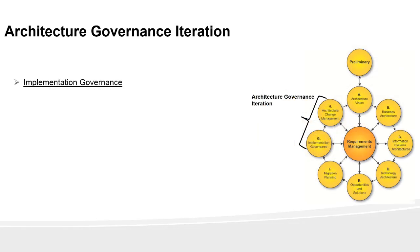The last iteration is the governance iteration. It covers implementation governance and architecture change management phases. This iteration covers Phase G and Phase H.